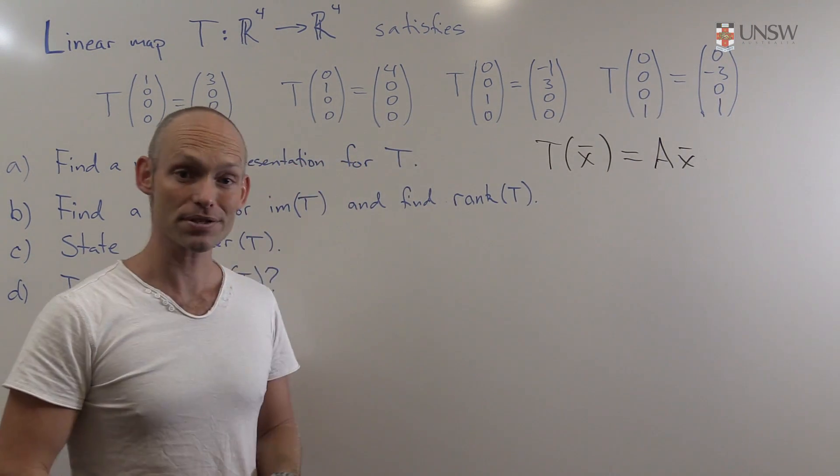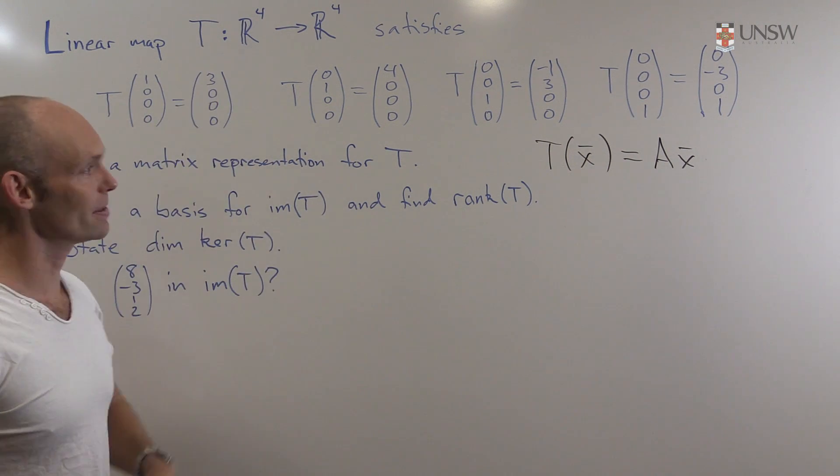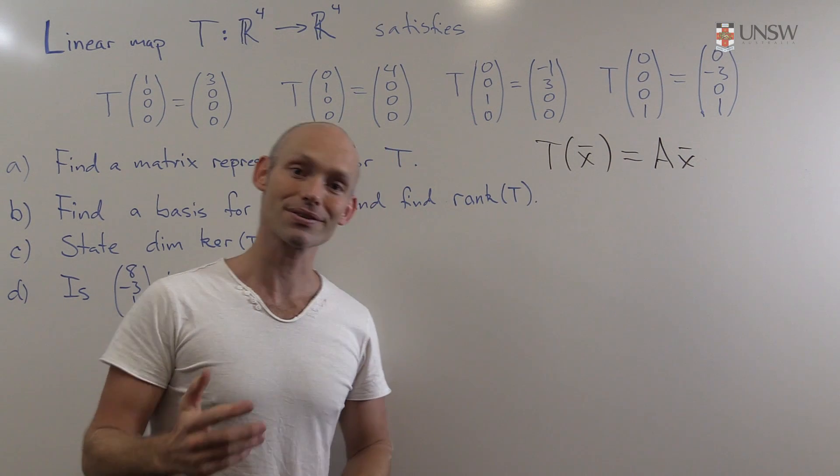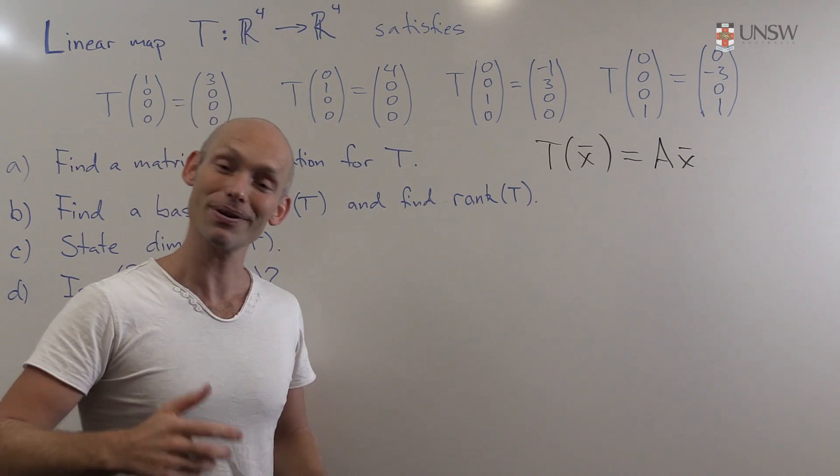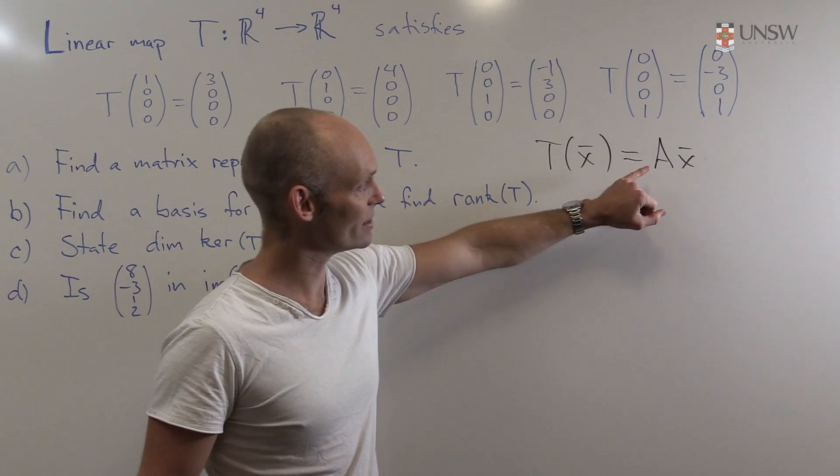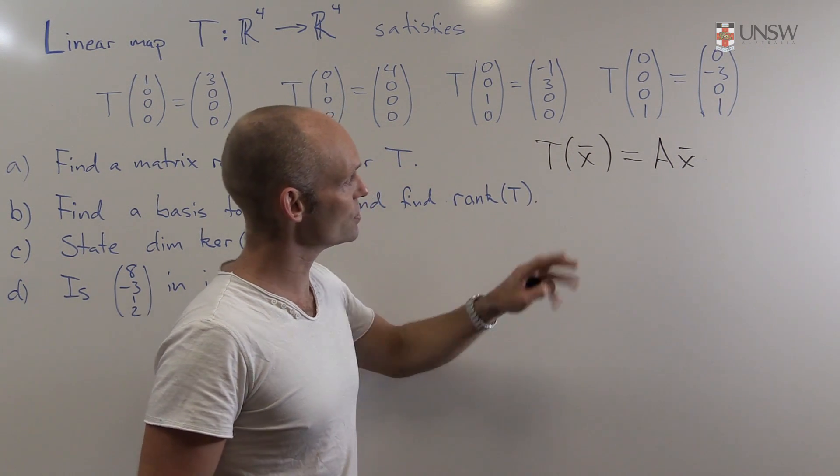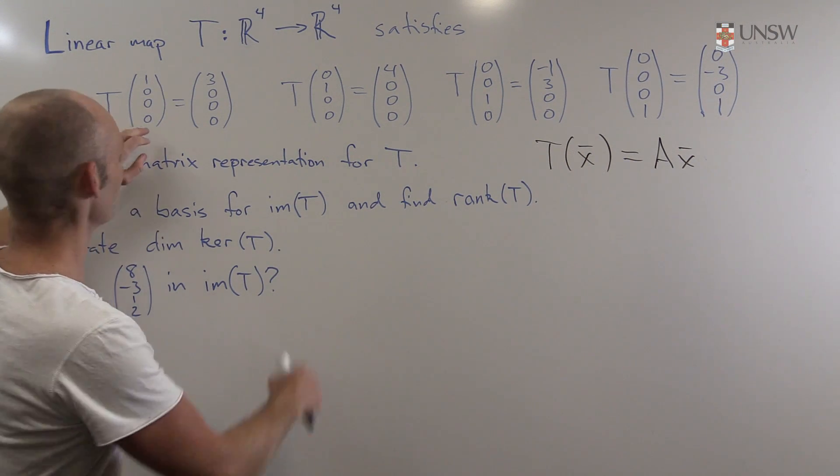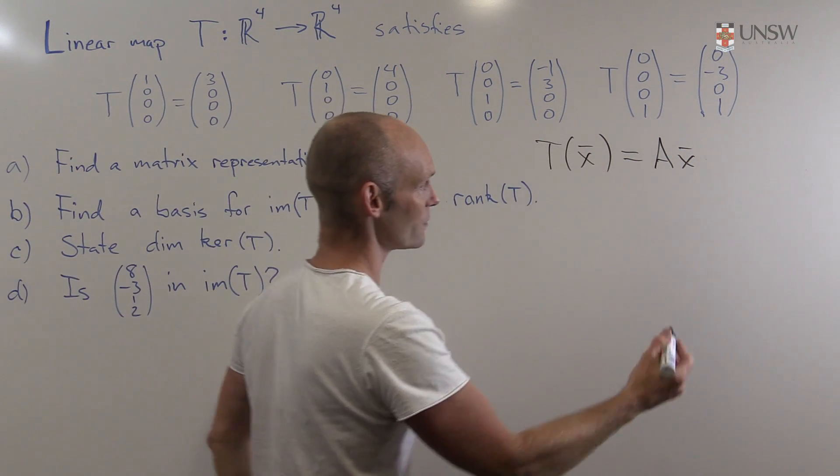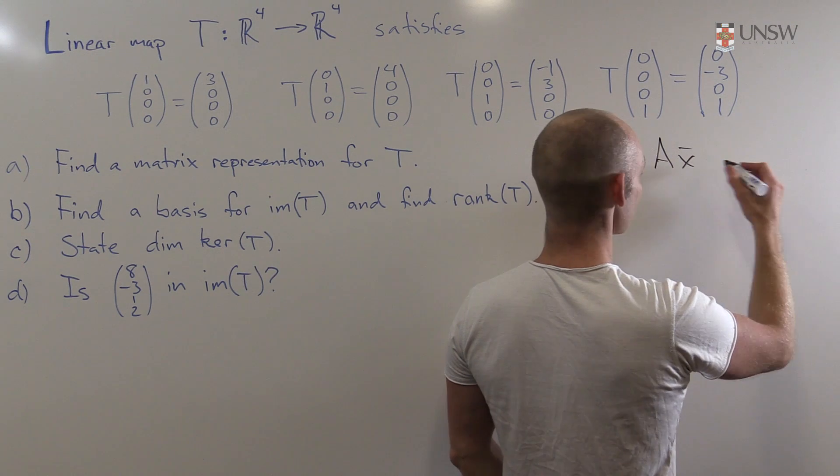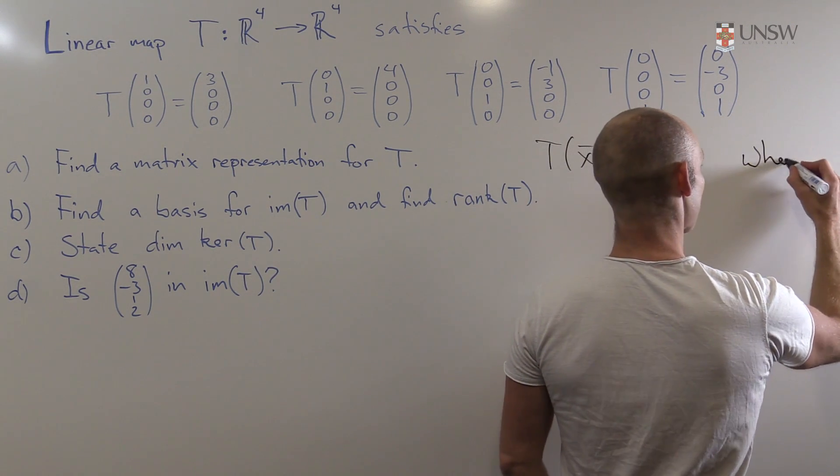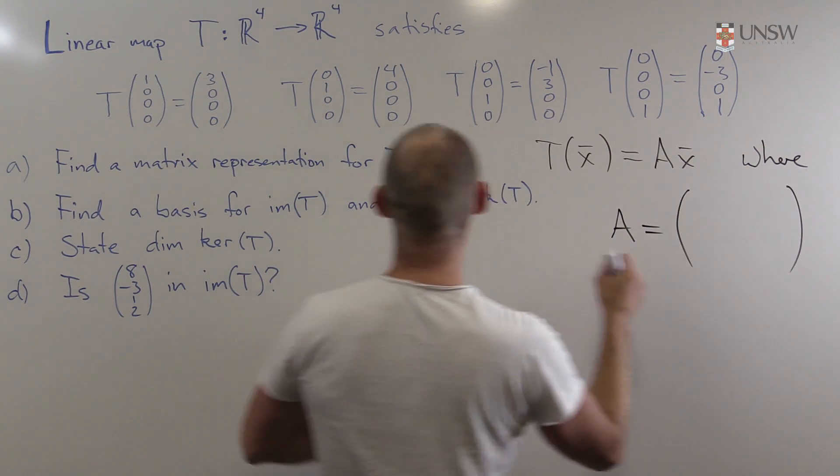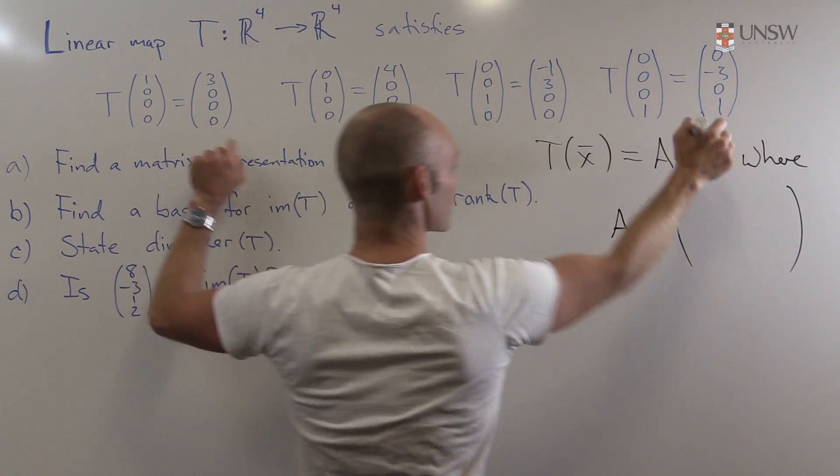Now, that's always possible because T is a linear map, and we've got a theorem to say that it's possible, which is the matrix representation theorem. So by this theorem, we know exactly what A is, because we've got exactly the right vectors that we need to use the theorem. We've got these standard unit basis vectors. So in fact, we can just say T of x is equal to A of x.